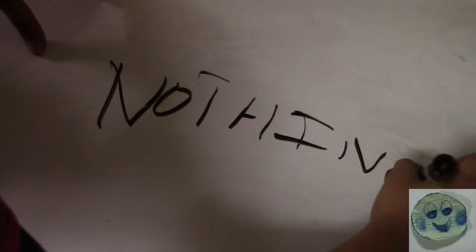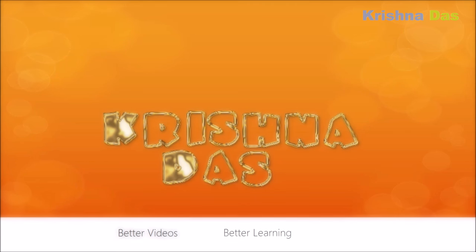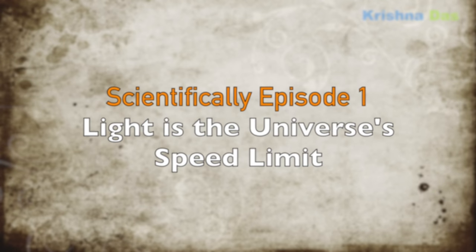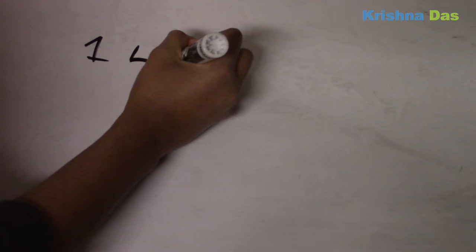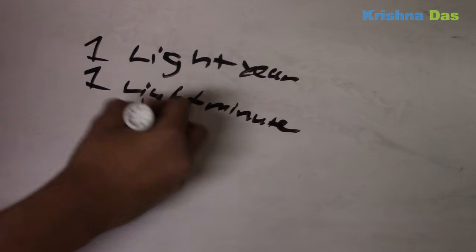This video will prove that nothing could go over or at the speed of light. We want to answer the question: is light the universe speed limit? And yes, eventually we actually prove this.